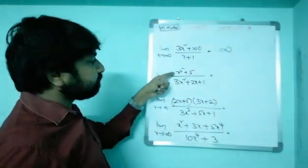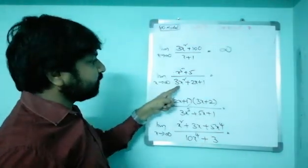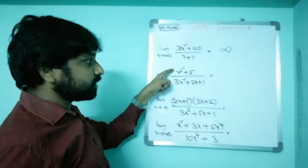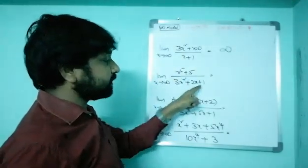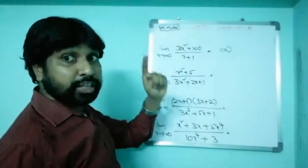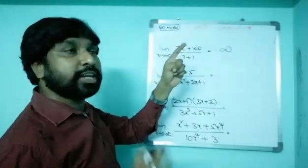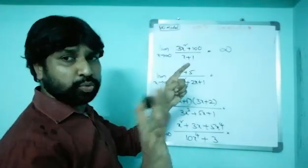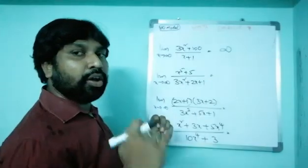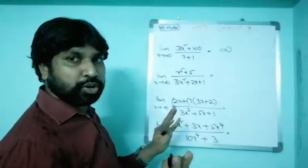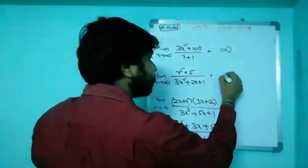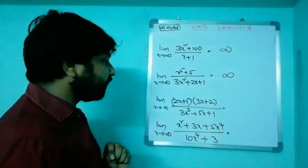Next example: the numerator is x power 5 and the denominator is x square. The highest powers are x power 5 and x square. After cancellation, x cubed is remaining in the numerator — that is x⁵ divided by x² equals x³. X is remaining in the numerator, so the answer is infinity.